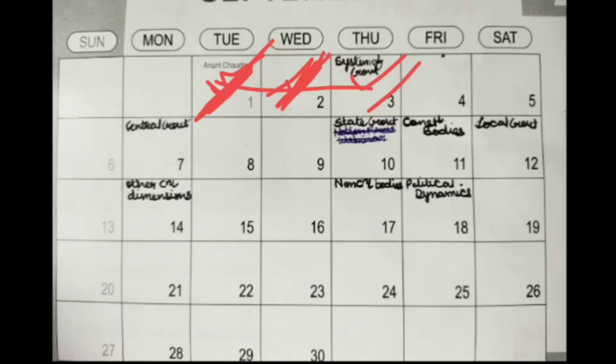You have already completed eight chapters in three days, so the system of government is almost completed with your four chapters. If you see the Indian Polity book, I would suggest if you haven't yet opened the book in front of you, please do that.